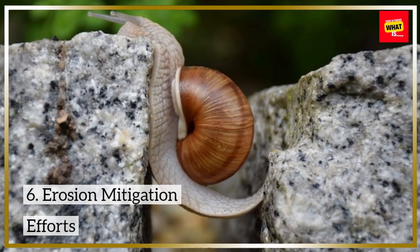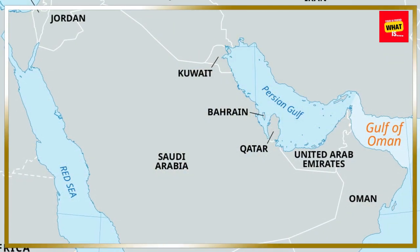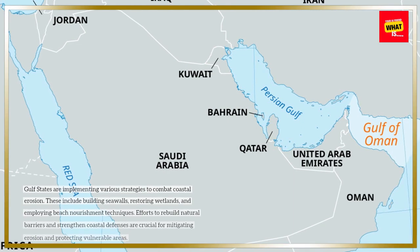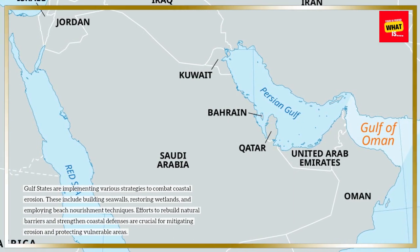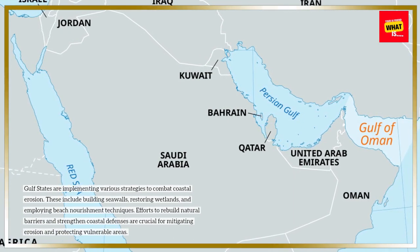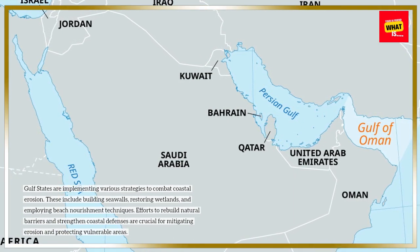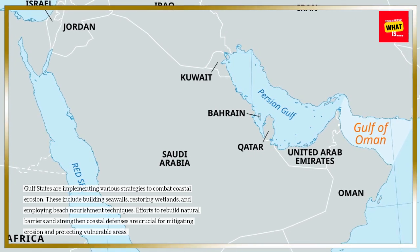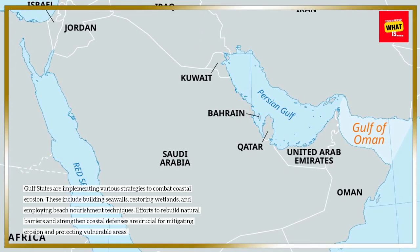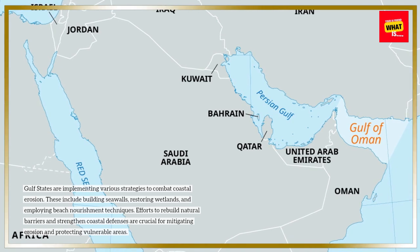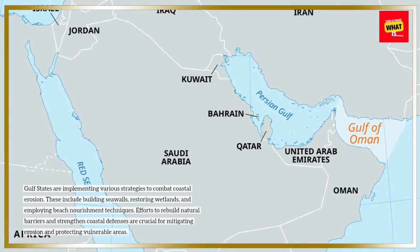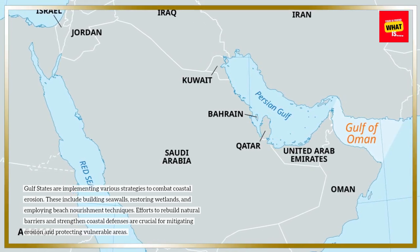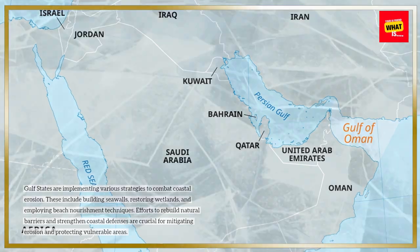Gulf states are implementing various strategies to combat coastal erosion. These include building seawalls, restoring wetlands, and employing beach nourishment techniques. Efforts to rebuild natural barriers and strengthen coastal defenses are crucial for mitigating erosion and protecting vulnerable areas.